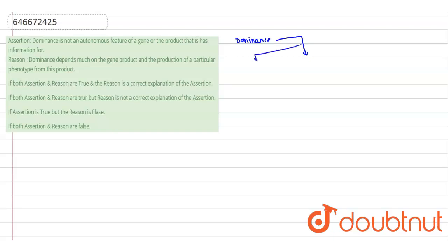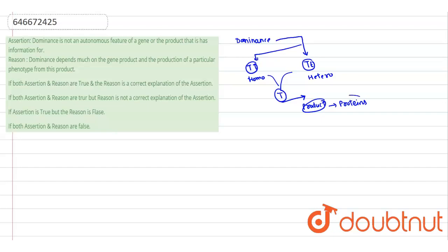It can have two possibilities — either it is homozygous or heterozygous. In both homozygous and heterozygous conditions, the gene is present which can lead to the formation of a product. That product is a protein. So this is not autonomous.